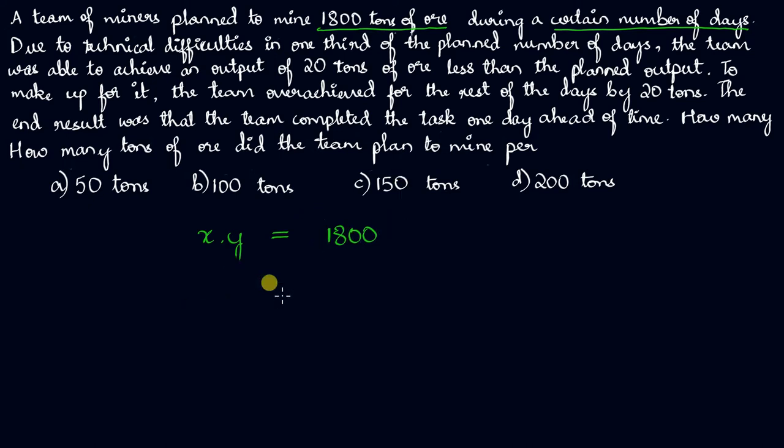All right, so let's put that down. That's one equation we have. Now, there are some technical difficulties in the one-third of the planned number of days. The planned number of days is y, so in the first y by three days there were some difficulties and the team were able to achieve an output of 20 tons of ore less than the planned output. The planned output was x, and the team was able to achieve x minus 20 tons of ore per day in these y by three days.